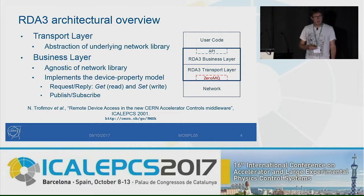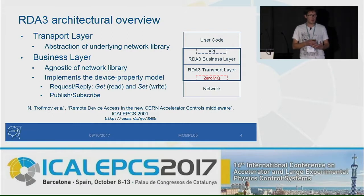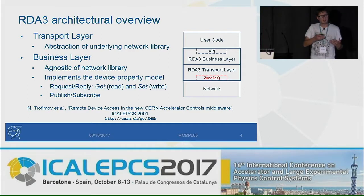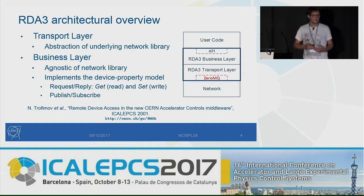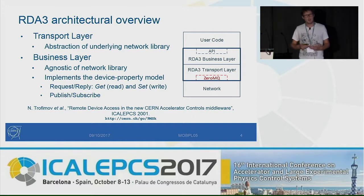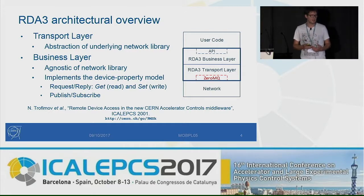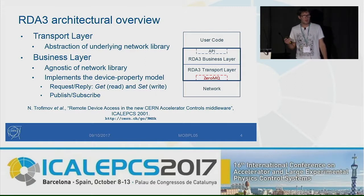The main responsibility of the business layer is to implement the device property model, which is a de facto standard model we use at CERN for controlling equipment within the accelerator complex. The device property model has two main paradigms. The first is request-reply, where you send a request to the server and receive the reply — either a get request for read operations or a set request to write things to the server. The second paradigm is standard publish-subscribe, where the client subscribes to a given access point and then receives periodic notifications from the server.